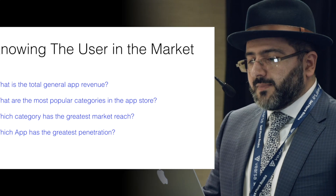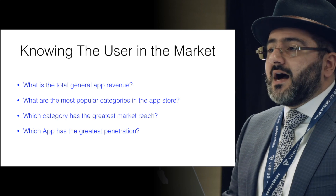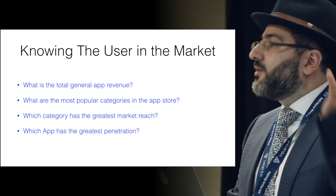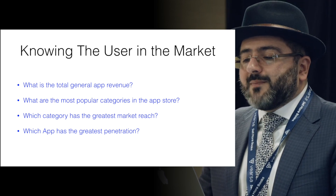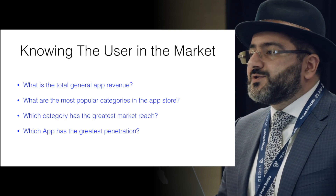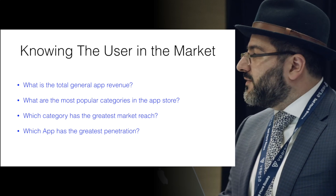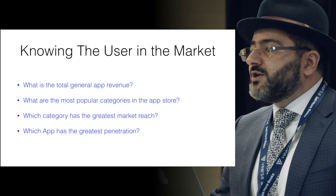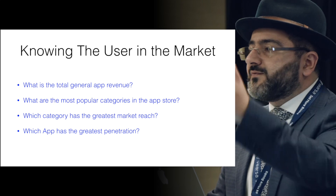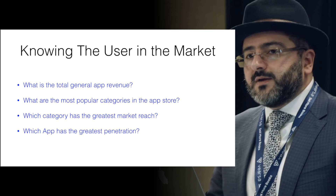Knowing the user in the market: what is the total general app revenue per user? This is a key element in any e-commerce endeavor, whether with e-books or succeeding on the internet. Next, what are the most popular categories in the app store? When a person goes to a store, what are the top shelf sections? An app store gives you categories just like a top shelf — what products sell fast? Like Barnes & Noble's bestsellers in the front, the top categories tell you what the best sellers are in virtual media.